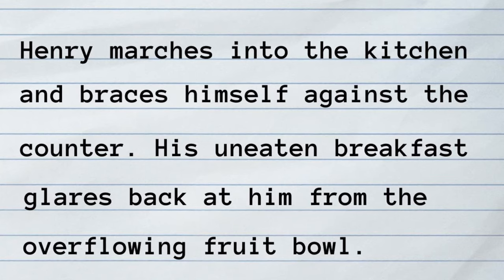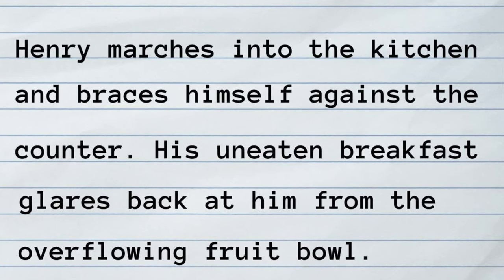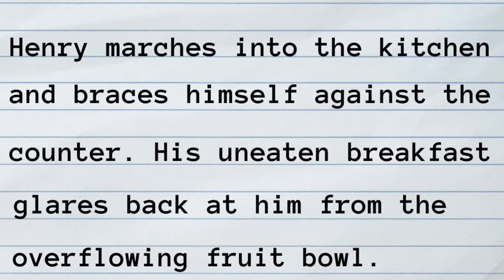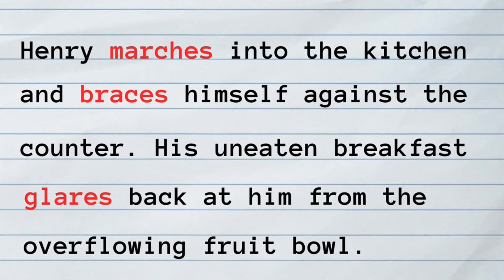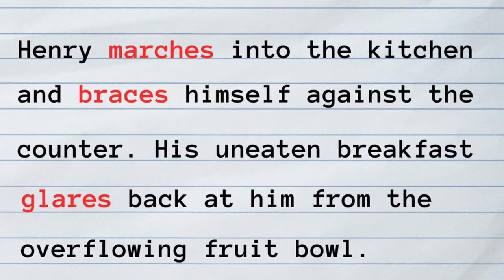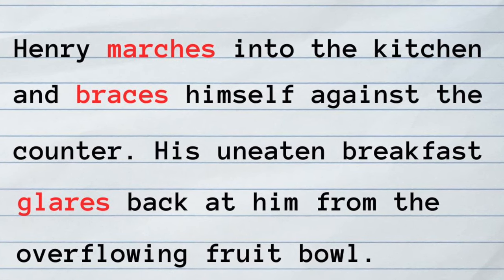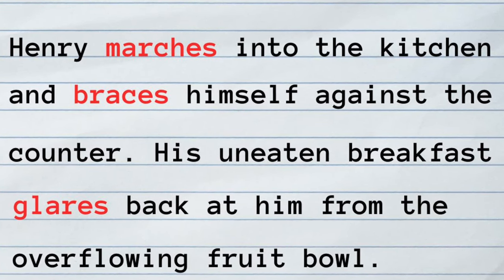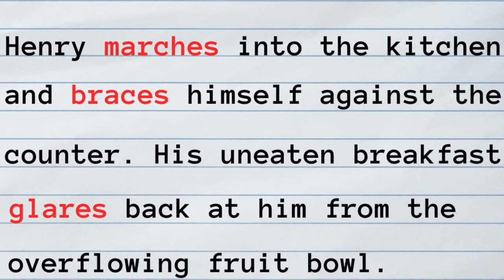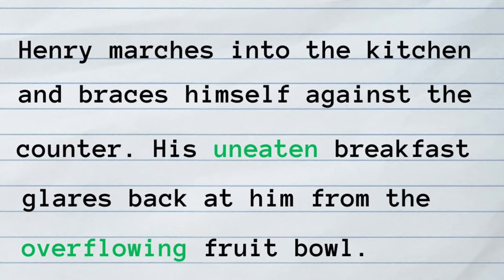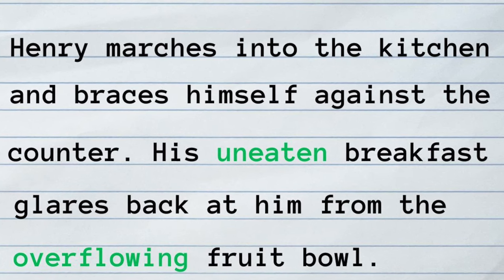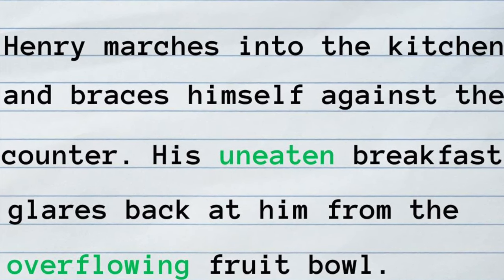Henry marches into the kitchen and braces himself against the counter. His uneaten breakfast glares back at him from the overflowing fruit bowl. Marches, braces, and glares are all active verbs that convey anger and agitation at Henry's current lack of control over his world. Even his breakfast glares at him. The words uneaten and overflowing insinuate that this is a regular occurrence — he might desperately seek control in his life, but has not been able to have it for some time now.